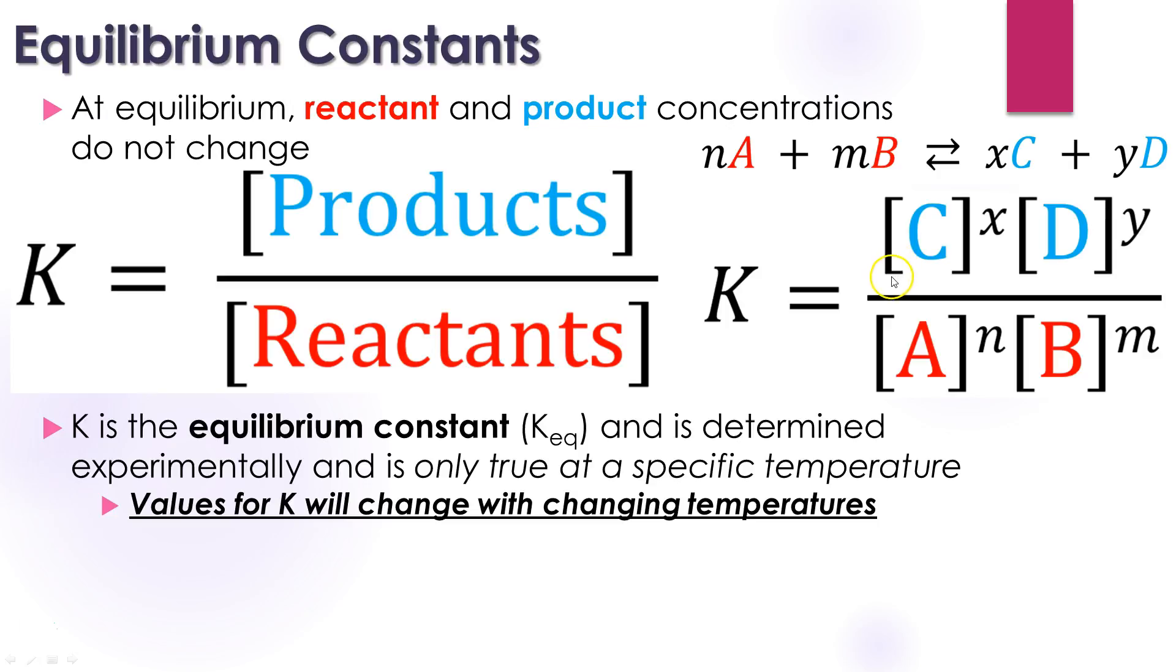Values for K will change with changing temperatures. In our next section, we'll talk about some things that won't change it. But temperature for sure will push this more toward the products or more toward the reactants, which will change that K value. A small K value is going to favor reactants. Whereas a large K value is more going to favor the products. If you have a really small number, that's because the reactants is going to be really large. And anything divided by a really large number is going to be small. So you're going to get small K values if the reactants are big. You're going to get large K values if those products are big. So a large K value tells you that this reaction is going to happen more to the right. Small K value is going to tell you it's more to the left.